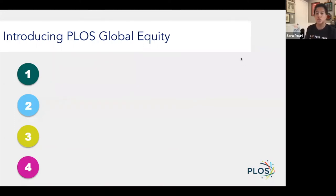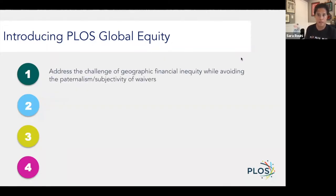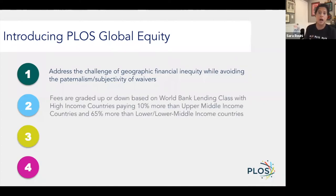So this overview on PLOS Global Equity — what we're trying to achieve with this model is how can we address the challenges of financial inequity based on geography without relying on waivers. We're not there yet, but we are working towards that with this model and with other models that PLOS has launched. The purpose of the model is to shift fees away from authors to their institutions and then to adjust those fees based on the institution's location.